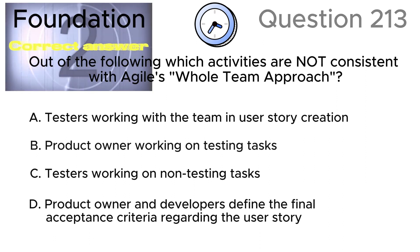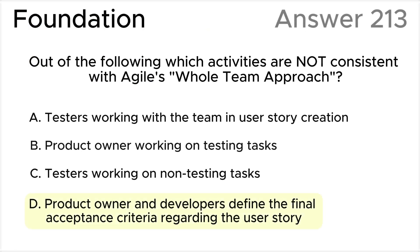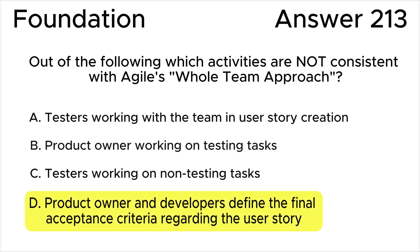The correct answer is D. Product owner and developers define the final acceptance criteria regarding the user story. This statement is not consistent with Agile's whole team approach. Testers should be an essential part of all discussions, including acceptance criteria regarding the user story — not only the product owner and developers.